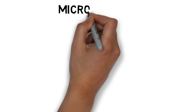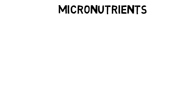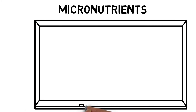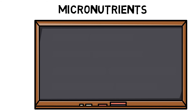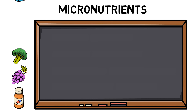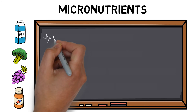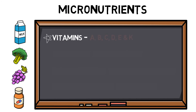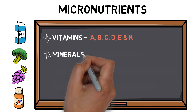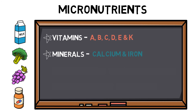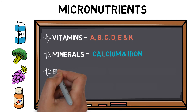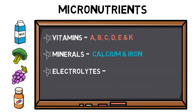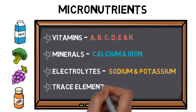Micronutrients are essential nutrients that maintain and support various processes throughout the body. They cannot be made by our bodies and therefore need to be consumed through our diet. Key micronutrients include vitamins such as A, B, C, D, E and K; minerals such as calcium and iron; electrolytes such as sodium and potassium; and trace elements such as iodine and zinc.